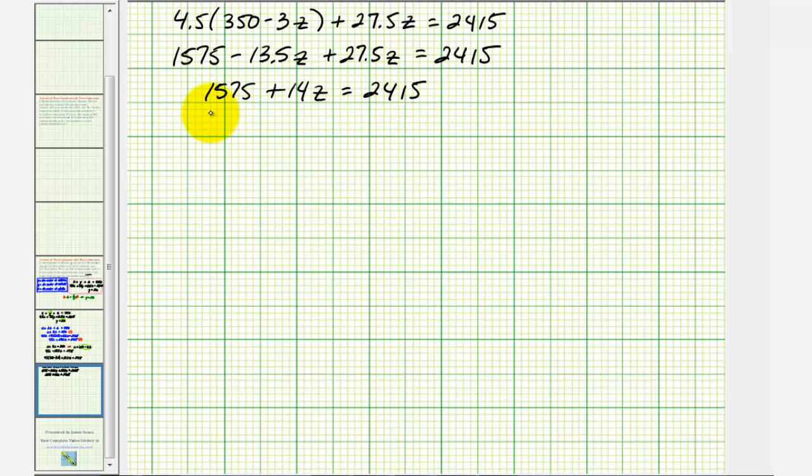Now subtract 1575 from both sides, giving us 14z equals 840. Divide both sides by 14, and we have z, which is the number of adults, equals 60.